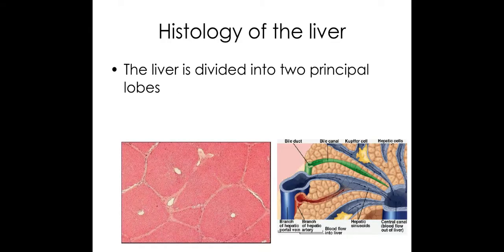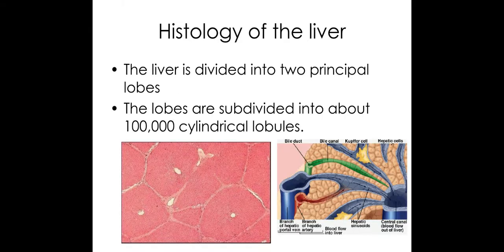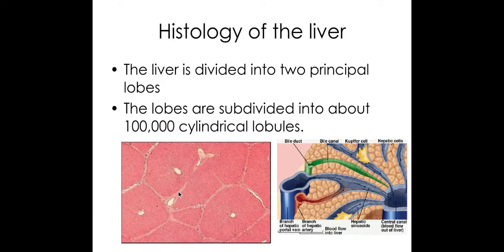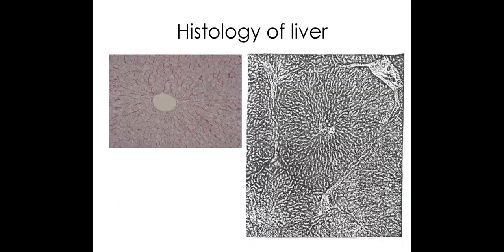The liver is actually in two different lobes, and in each of the lobes we have lots of cylindrical lobules which you can see here. This is a cross-sectional area of a lobule in a cartoon version, and you do need to be aware of the different components here and how to label them.